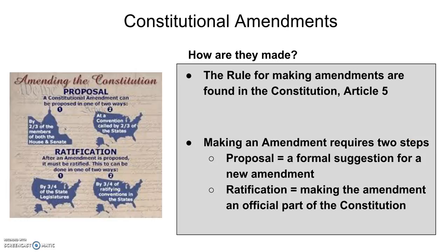The rules for making amendments are found in the Constitution in Article 5. Article 5 describes the steps that have to be taken in order for the Constitution to be formally changed. There are two steps that must be met: the first step is the proposal step, where the idea for a new amendment is formally suggested. The second step is ratification, when the proposed amendment is approved and made an official part of the Constitution.